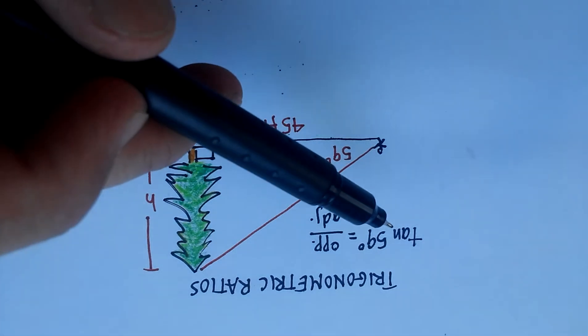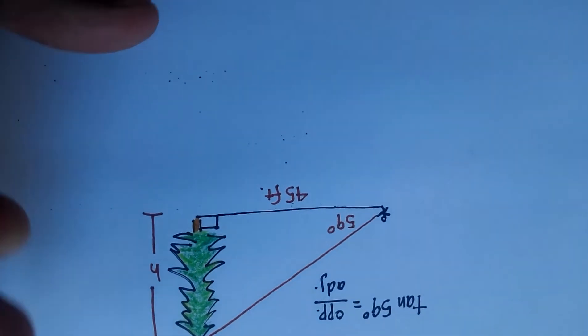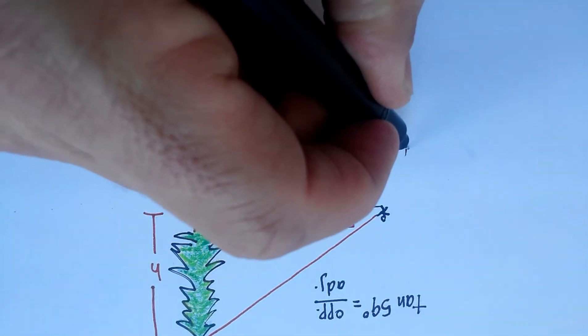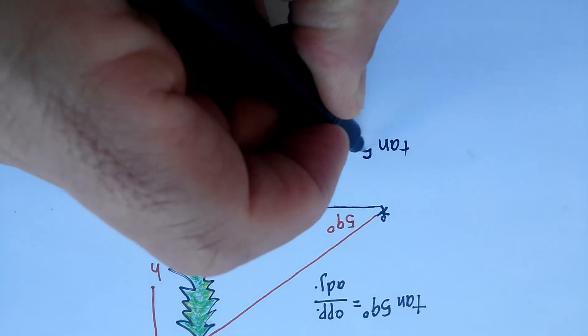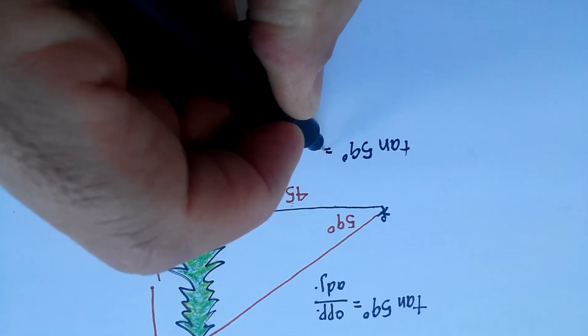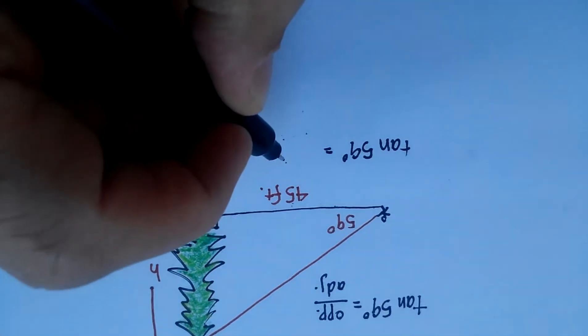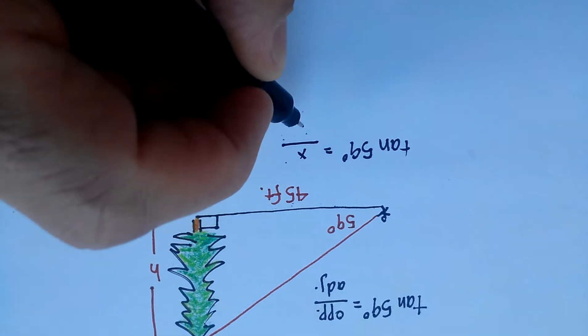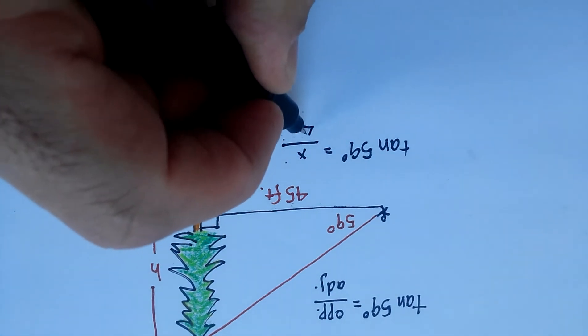So we can actually begin to solve this problem by saying that the tangent of 59 degrees is equal to the opposite, which is our unknown, so we'll call that our x, over 45 feet, which we do know.